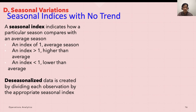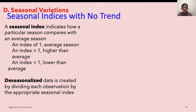When a seasonal component exists, a seasonal index indicates how a particular season — such as a month or quarter — compares with an average season. An index of one for a season would indicate that the season is average. If the index is higher than one, the values of the time series in that season tend to be higher than average. If the index is lower than one, the values tend to be lower than average. When no trend is present, the index can be found by dividing the average value for a particular season by the average of all the data.